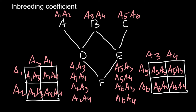Now let's find the inbreeding coefficient. The last step is to find the probability that individual F would have two identical alleles that came from one parent and from the other parent. Let's consider whether allele A1 can appear — we can see it in individual D's genotypes. Individual E may also have allele A3, and we can see it twice.